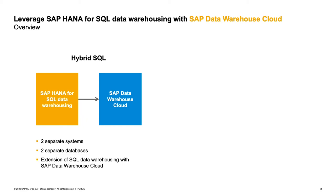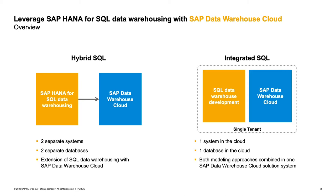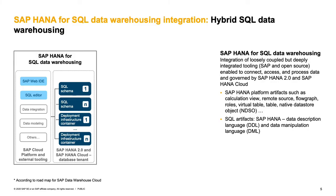The first topic I want to highlight is that there are different options for doing this kind of integration. On one hand, in a hybrid mode, you would have an existing Data Mart or SQL data warehouse system separately from Data Warehouse Cloud — two separate databases. On the other hand, there is an option now with Data Warehouse Cloud where you can do both in an integrated fashion on one system. That's what I'm going to explain today, and you will see it in a demo.